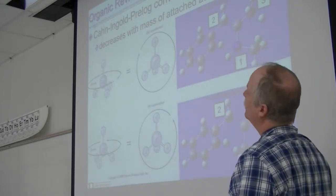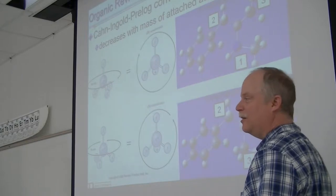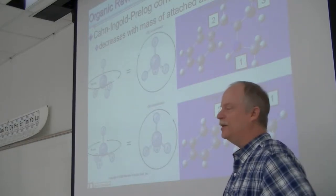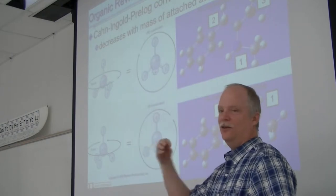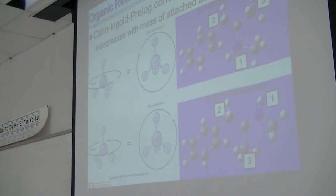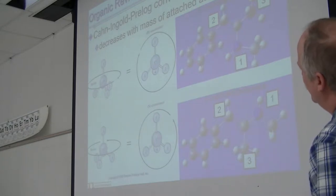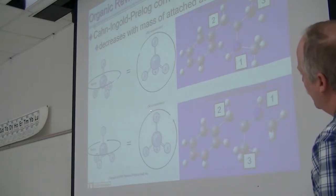Do you remember the convention of priority from organic? You put the hydrogen, the lowest priority, in the back. Then you look in terms of the heaviest atom and see if that goes in a clockwise or counterclockwise manner. Here's an R enantiomer going clockwise 1, 2, 3, and here's an S going counterclockwise 1, 2, 3.